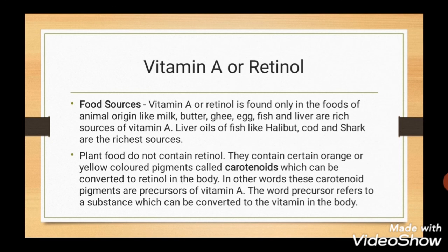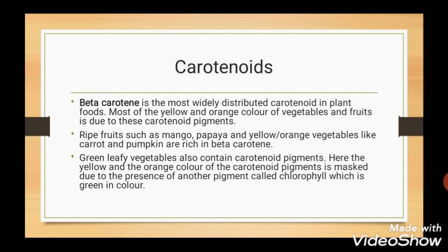Vitamin A is also known as Retinol. Food sources from animal origin include milk, butter, ghee, egg, fish, and especially fish liver oils. Plant foods do not contain Retinol, but they contain certain orange or yellow colored pigments called carotenoids, which can be converted to Retinol in the body. Beta Carotene is the most widely distributed carotene in plant foods. Fruits like Mango and Papaya, and vegetables like Carrot and Pumpkin are rich in Beta Carotene. Green leafy vegetables also contain carotenoid pigment, but the color is masked by chlorophyll, which is green.